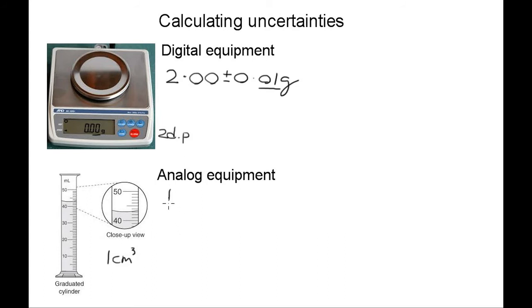So to write the uncertainty, it's half the smallest scale division. You look on your measuring cylinder, find the smallest scale division, and then halve it. That would be your uncertainty.